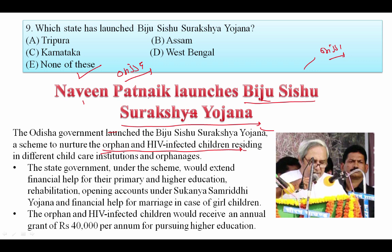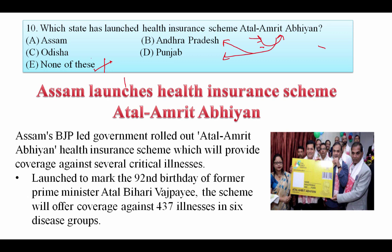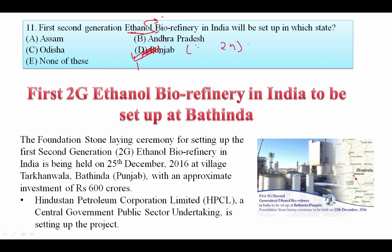Under the Biju Sishu Suraksha Yojana, the Odisha state government would extend financial help for primary and higher education, opening accounts under Sukanya Samriddhi Yojana, and financial help for marriage in case of girl children. The orphan and HIV-infected children would receive an annual grant of rupees 40,000 per annum for pursuing higher education. Which state has launched the health insurance scheme Atal Amrit Abhiyan? The Assam BJP-led government rolled out Atal Amrit Abhiyan health insurance scheme, providing coverage against 437 ailments in six disease groups, launched to mark the 92nd birthday of former PM Atal Bihari Vajpayee. Your answer is A, Assam.